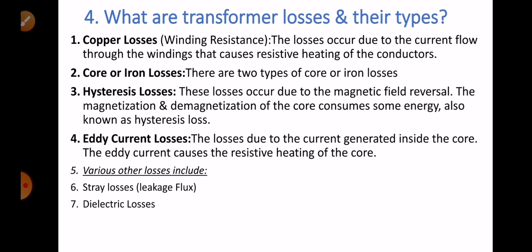Question number four: what are transformer losses and their types? There are different types of losses in a transformer. Losses are the difference between input and output power. The first loss is copper losses, also called winding resistance losses. These losses occur due to current flowing through the winding, which causes resistive heating of the conductors.